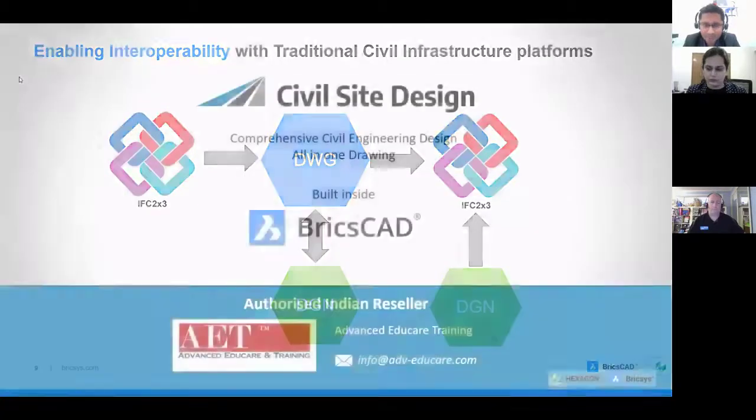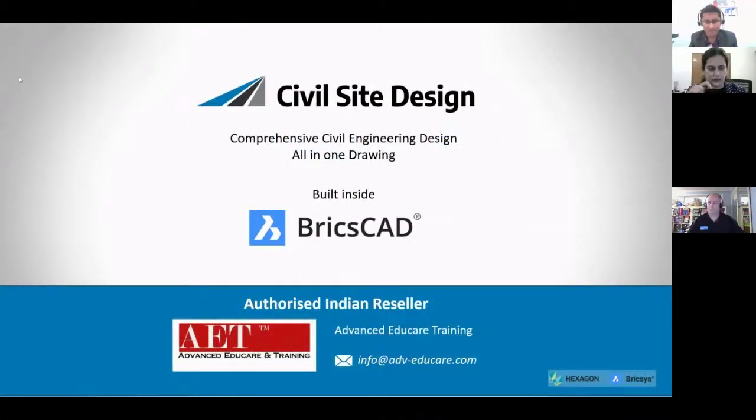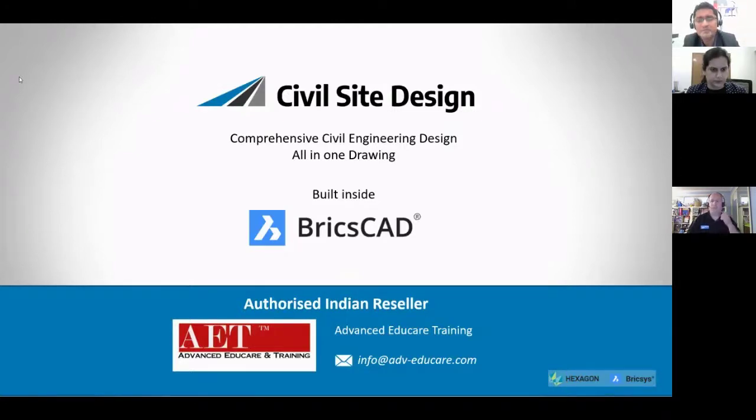I would like to introduce Civil Site Design, our application on top of BricsCAD for road design works. Civil Site Design really adds civil engineering, road design, and pipe design inside the BricsCAD environment — all in one and all inclusive. It incorporates IRC standards for sight distance, horizontal and vertical geometry, and automates repetitive tasks such as intersections, curve returns, cul-de-sacs, knuckles, and roundabouts. Everything is inside the drawing, so as you design, you're basically drafting your output and getting your production.